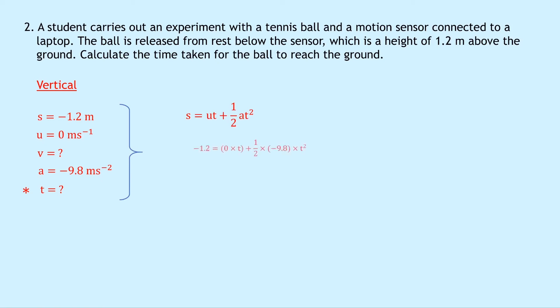Substituting in the numbers, we get minus 1.2 equals 0 times t plus a half times minus 9.8 times t squared. And again, this term is going to disappear because we've got 0 times t.